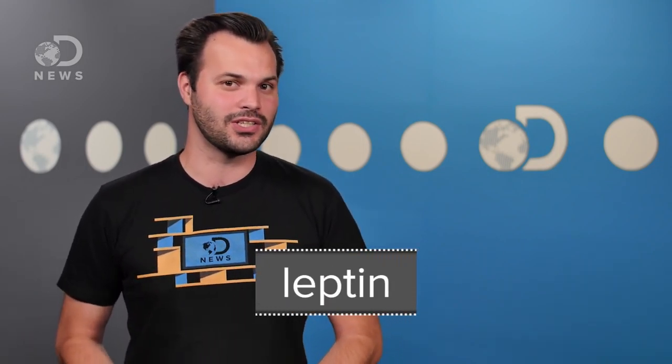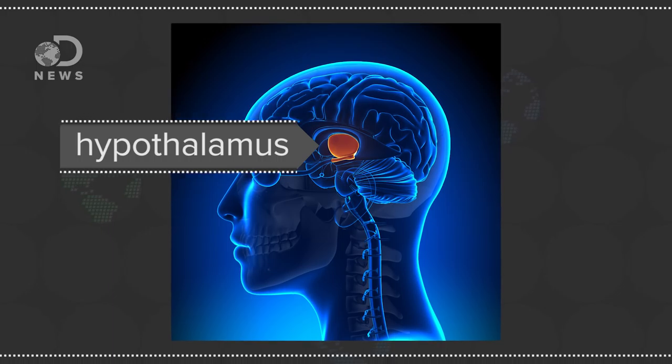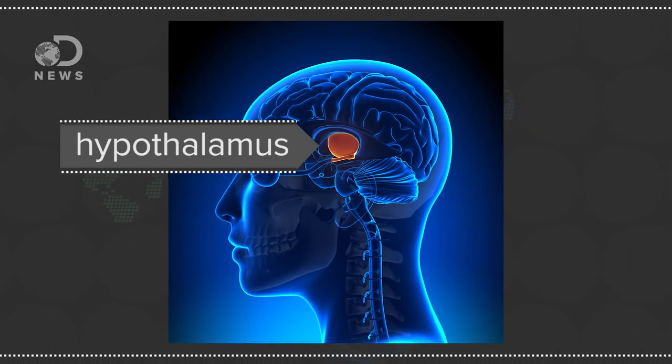Then the stomach stretches and leptin is released from fat cells, telling your body full, full. To make us eat, ghrelin triggers the hypothalamus, which triggers the release of gastric acids and muscles that move food through your gastrointestinal tract.